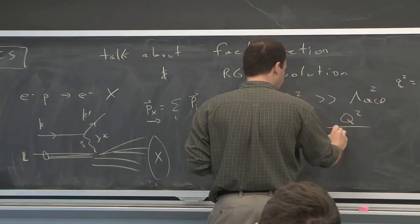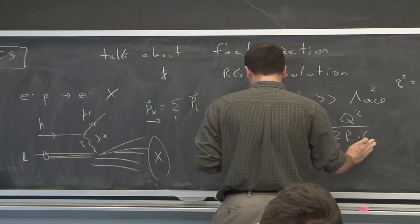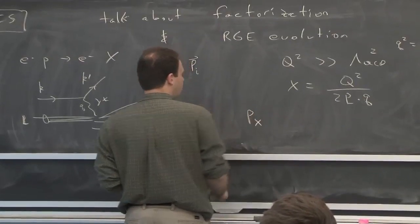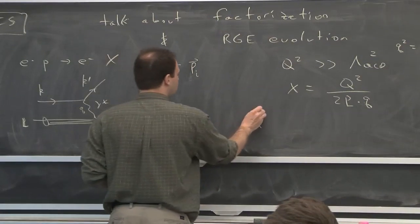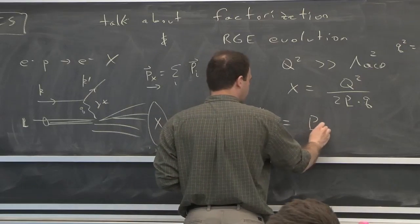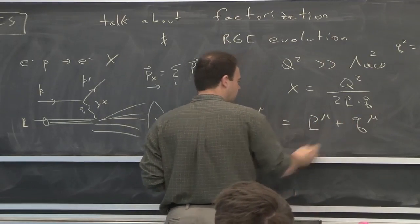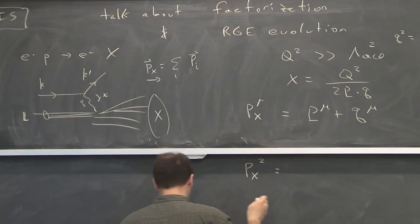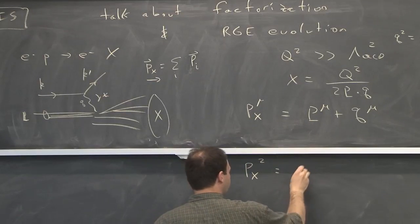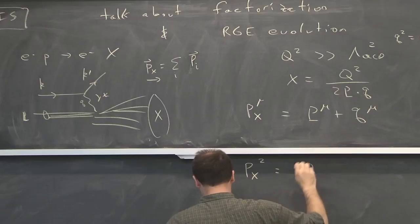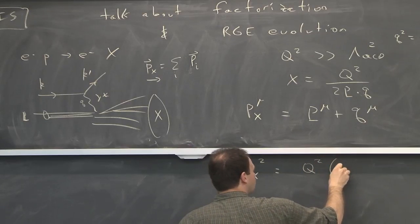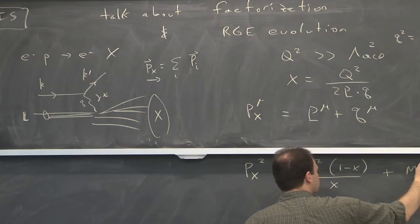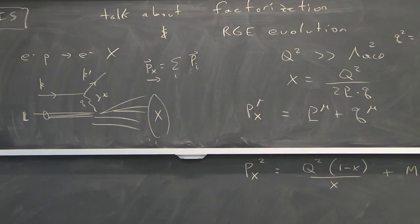And you can talk about P_x, which is the P_x mu. And by momentum conservation, that's the proton momentum plus whatever momentum came in from the leptons, Q. So P_x squared, if you square it, well, this guy is giving you mass of the proton squared. And then there's a cross term, and this guy squared. And if you put those things together, you can write it like this. This is an exact equation. P_x squared is that.